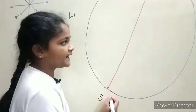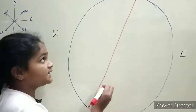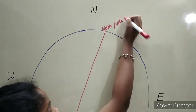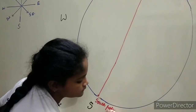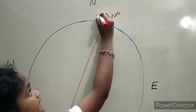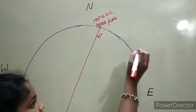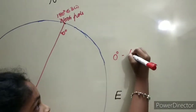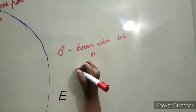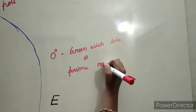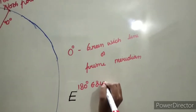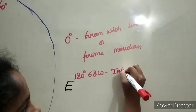Vertical lines are called longitudes. They are semicircles and meet at the North Pole and South Pole. Zero degrees longitude is also known as the Greenwich Line or Prime Meridian. 180 degrees east and west longitude is also known as the International Date Line.